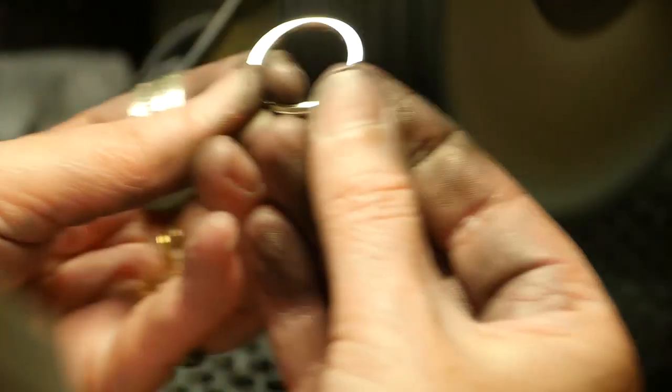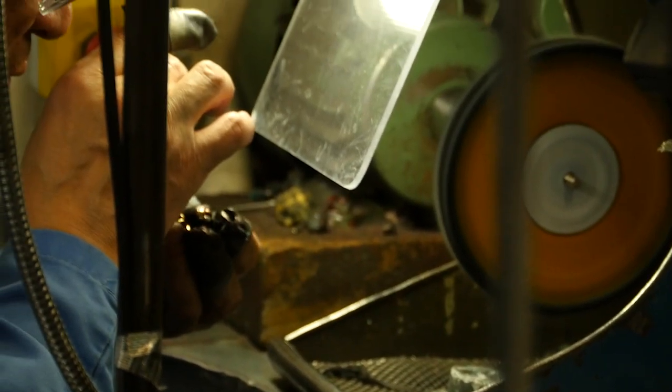Suivant la valeur et la complexité du bijou, le travail du polisseur sur une pièce peut durer de quelques secondes à de longues heures.